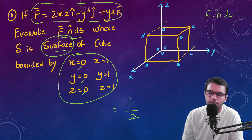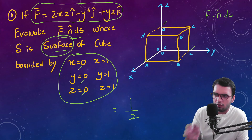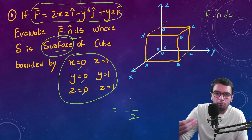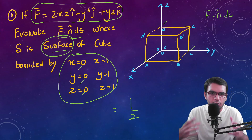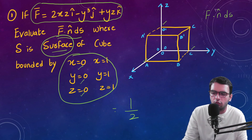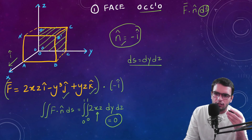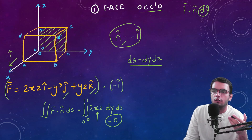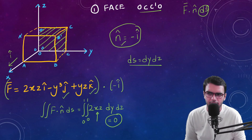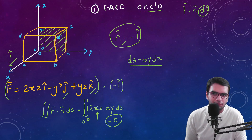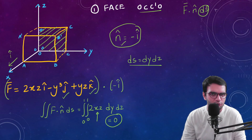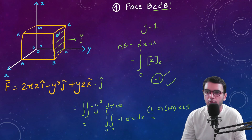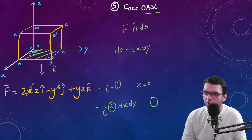Summing all six faces: 0 + 1 + 0 + (−1) + 0 + 1/2 = 1/2. So the total surface integration over the cube is 1/2. I covered this problem to help you understand surface integration from a physics perspective, where imagination is important. These conceptual questions are best for building understanding, even if lengthy problems like this may not appear directly in exams like IIT JAM.